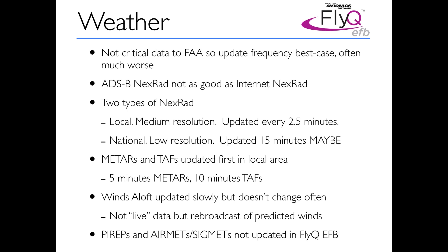ADS-B Nexrad isn't bad, but it's not nearly as good as Nexrad from the internet. Within about 200 miles, there's local radar — medium resolution, updated best case every two and a half minutes. There's also national CONUS radar, considerably lower resolution, updated best case every 15 minutes — and in practice, you often don't pick up the CONUS at all, depending on which ADS-B ground stations you're near.